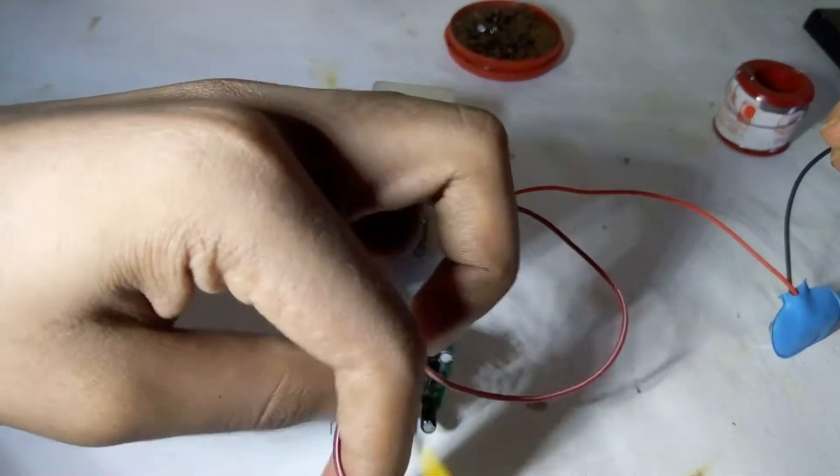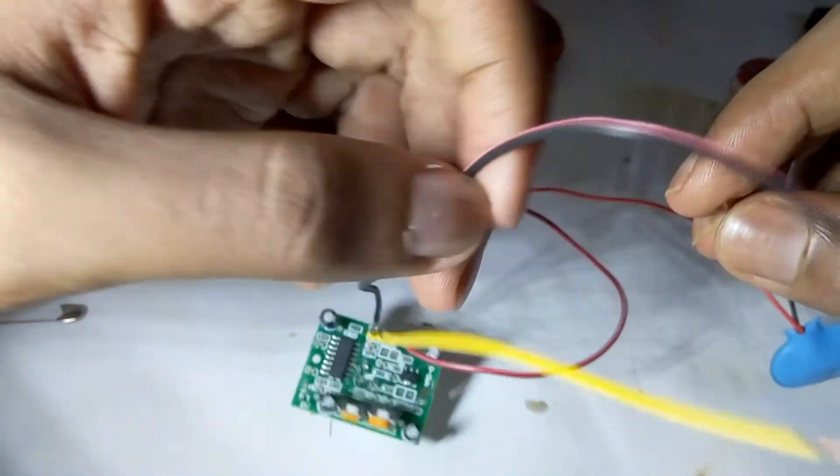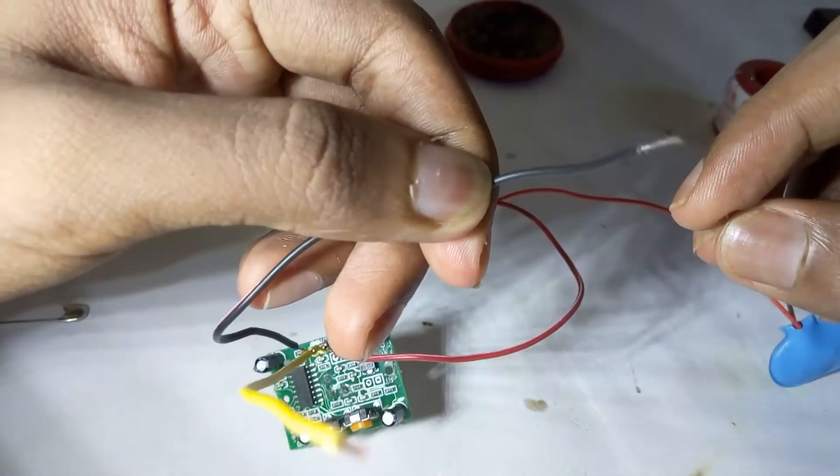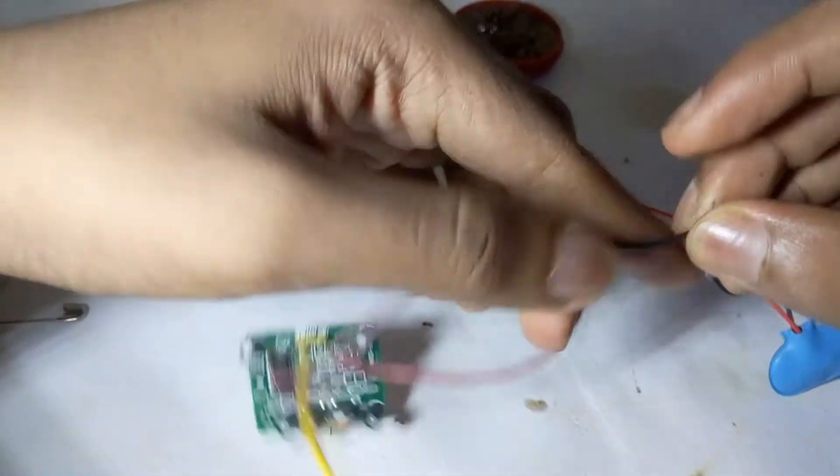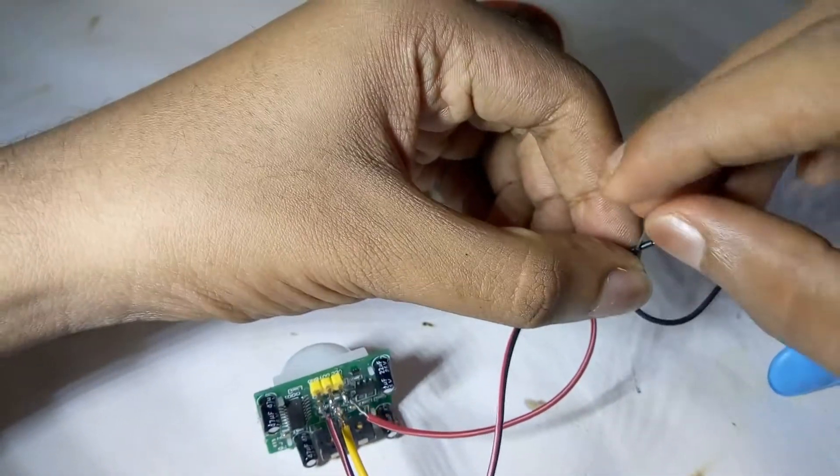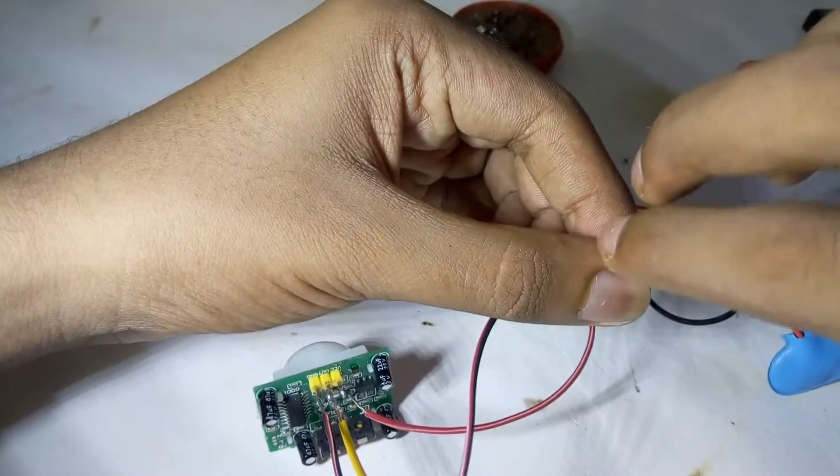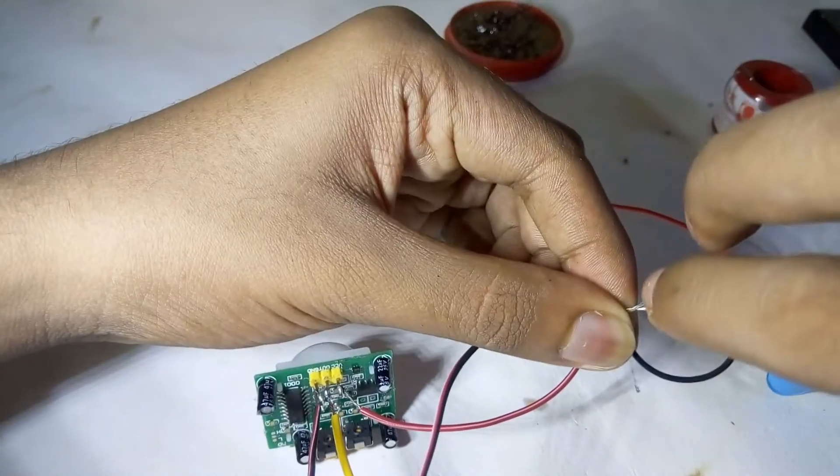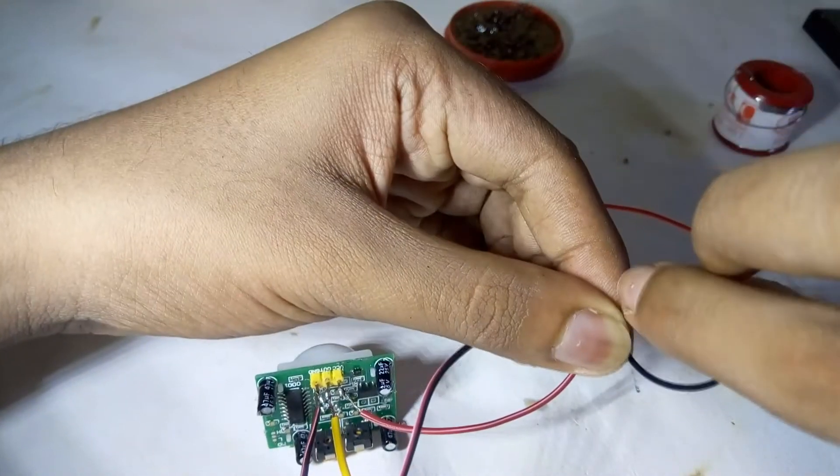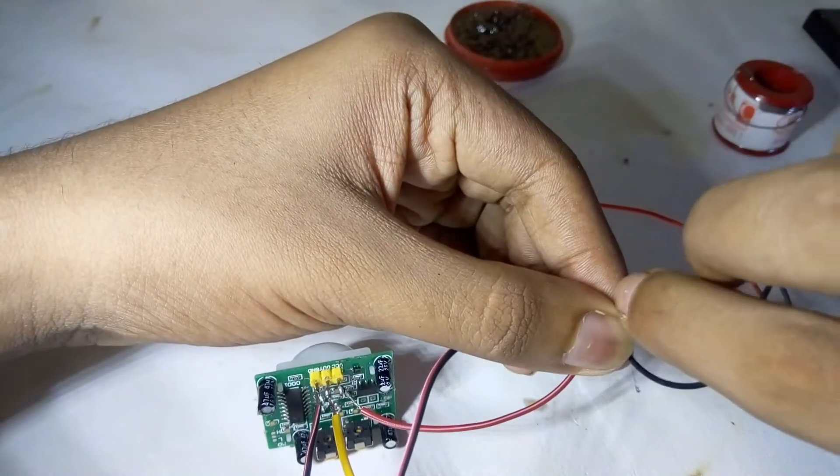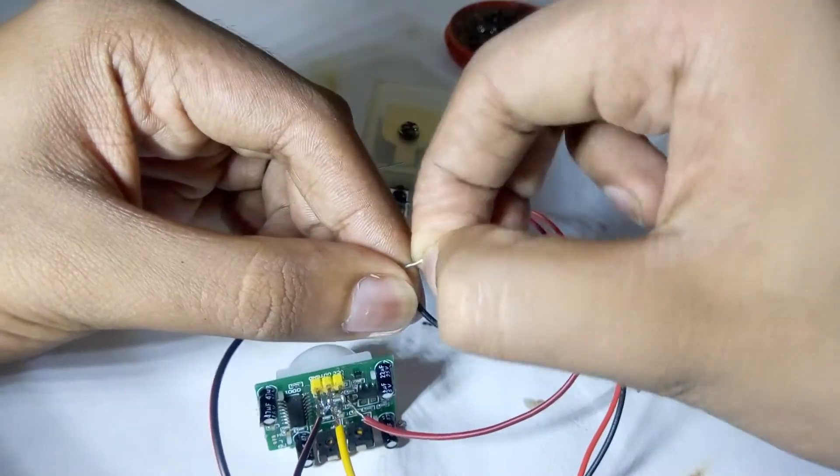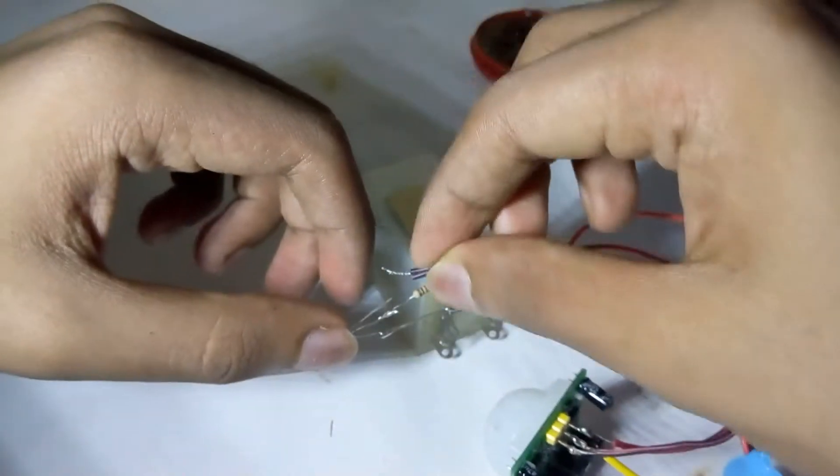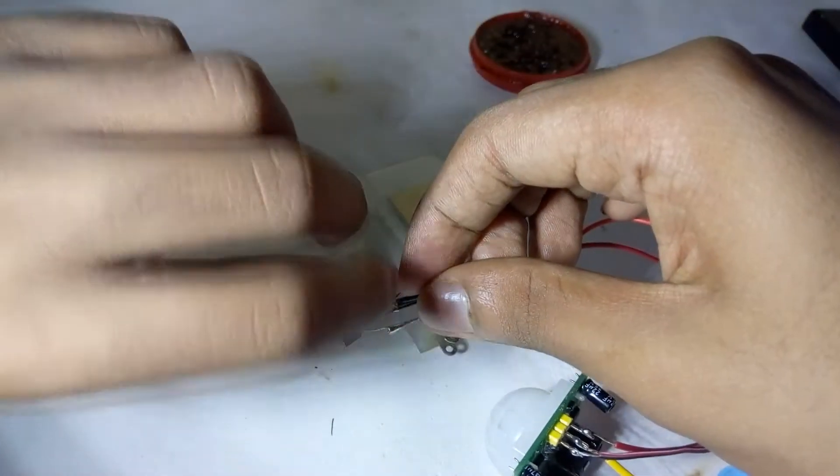Take the black wire, that is the ground of the PIR sensor. We need to connect it with the battery's negative terminal and connect it with the transistor's free leg.